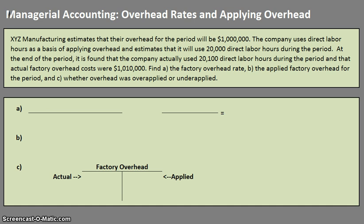We have a problem here. XYZ Manufacturing estimates that their overhead for the period will be $1 million. The company uses direct labor hours as a basis of applying overhead and estimates that it will use 20,000 direct labor hours during the period. At the end of the period it is found that the company actually used 20,100 direct labor hours and that the actual factory overhead costs were $1,010,000. They want us to find A, the factory overhead rate; B, the applied factory overhead for the period; and C, whether that overhead had been overapplied or underapplied.